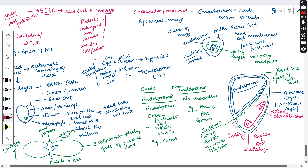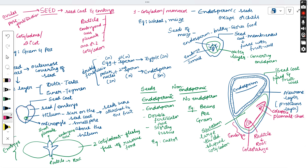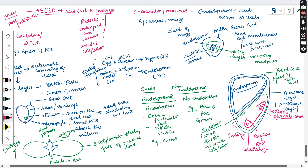The coleoptile is a layer that surrounds the plumule. Similarly, a layer surrounds the radicle called the coleorhiza. The embryo is a small structure situated at one end of the endosperm, containing the scutellum and the axis with radicle and plumule. The layer surrounding the plumule is the coleoptile, and the layer surrounding the radicle is the coleorhiza. These are the key differences between monocot and dicot seeds.